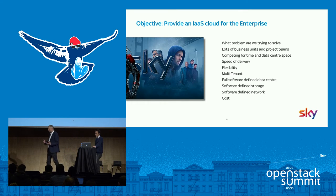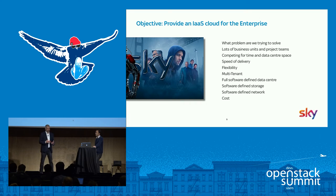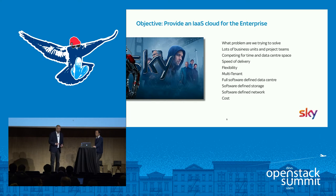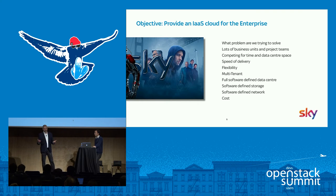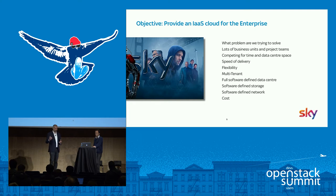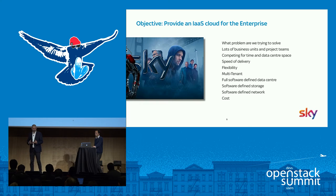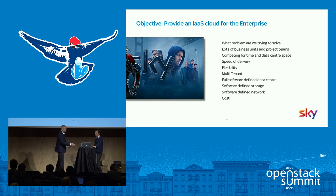We're a technology company with around 3,000 developers building software for set-top boxes, broadcast processing systems, advertising sales, online TV, and the online shop. We have lots of development teams and applications that need hosting. We needed a single delivery mechanism — instead of cloud islands with different clouds and different sets of infrastructure, we wanted a single API and single roadmap delivering software-defined networking, software-defined storage, and a full software-defined data center that was multi-tenant. The only product we could find was OpenStack.